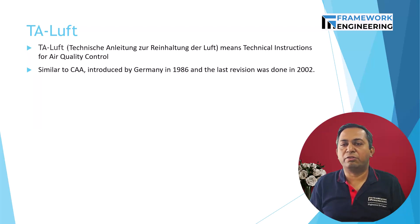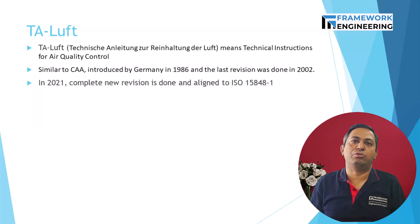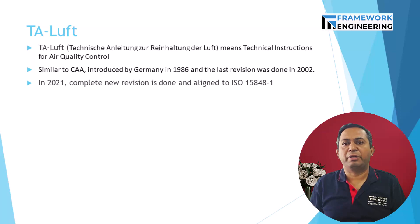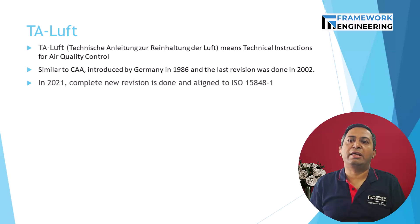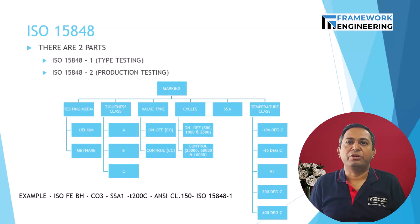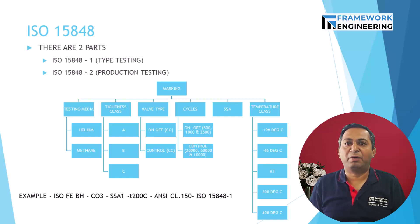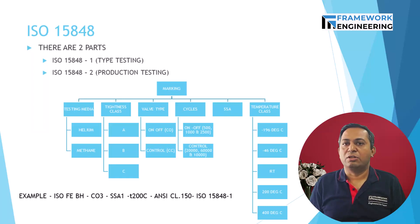Next we can talk about ISO 15848-1 and 2, where Part 1 is for type testing and Part 2 is for production testing. In all these tests, all possible leakage paths are measured for leakages. Let us first discuss Part 1.